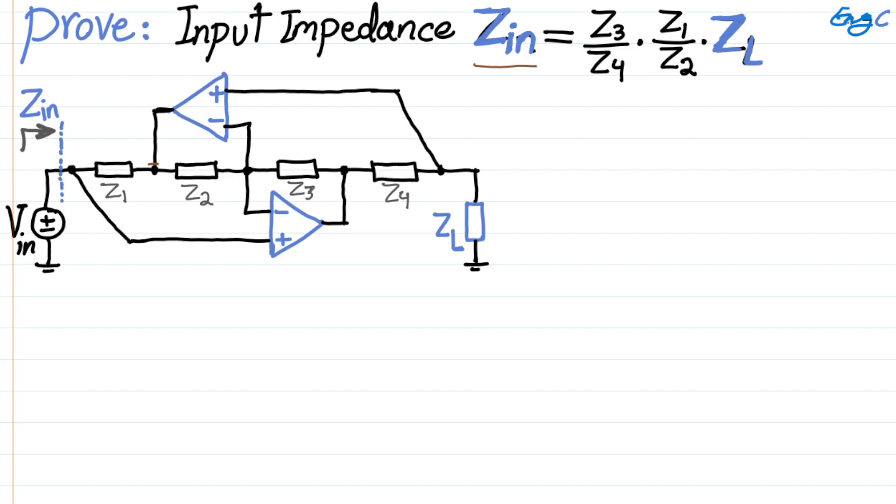In this general impedance converter, we want to show this interesting relationship that Zin, or input impedance, as shown here, has this conversion relationship with Zl. Basically, with proper selection of Z1, Z2, Z3, Z4, which are four impedances that we can set in this circuit,